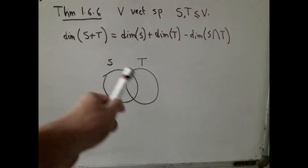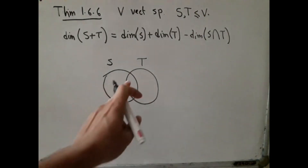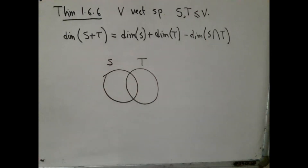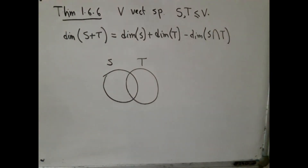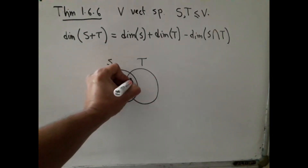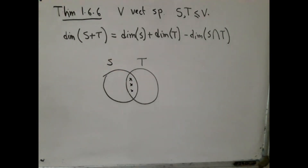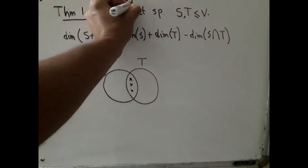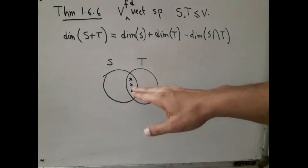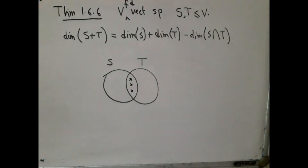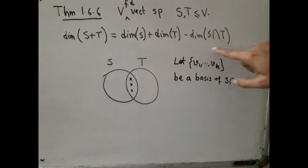I have shown the subspaces as a Venn diagram. What I do is start by counting elements in S intersection T — however, it is not the number of elements we are interested in but the dimension, which is the number of elements in a basis. So I will start by taking a basis of S intersection T. Since S intersection T is a subspace — and we are working with finite dimensional vector spaces — it must have a basis. Even if it is the trivial vector space, the basis is the empty set. So I start by taking a basis of S intersection T, and I can see that K is actually the dimension of S intersection T.